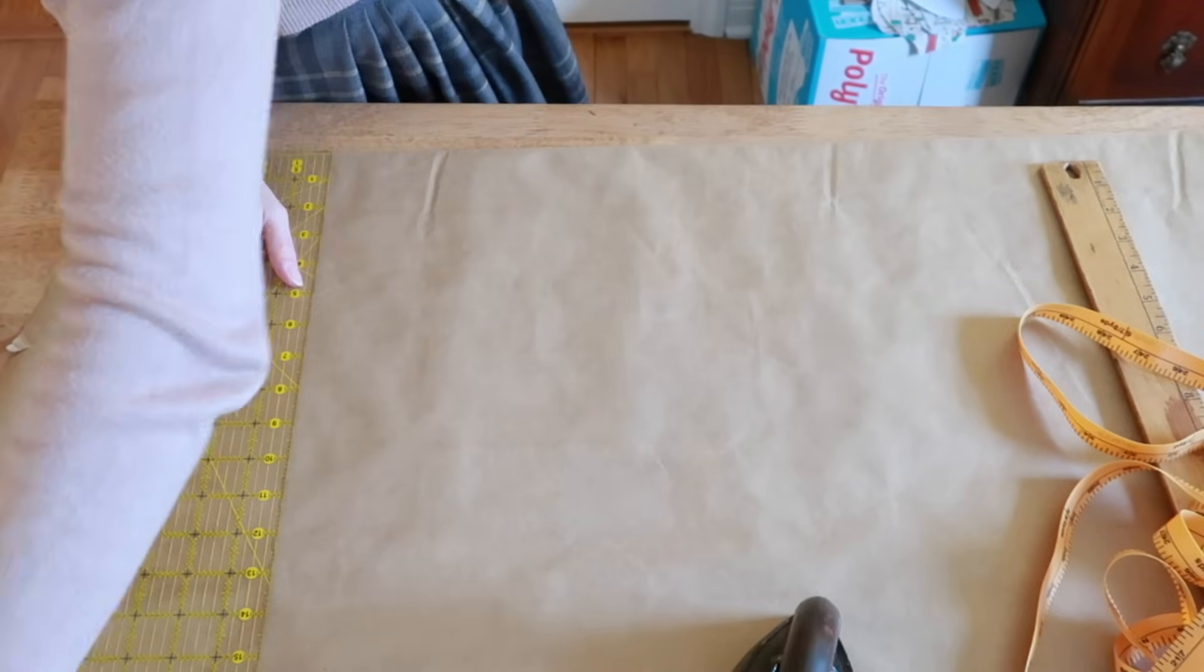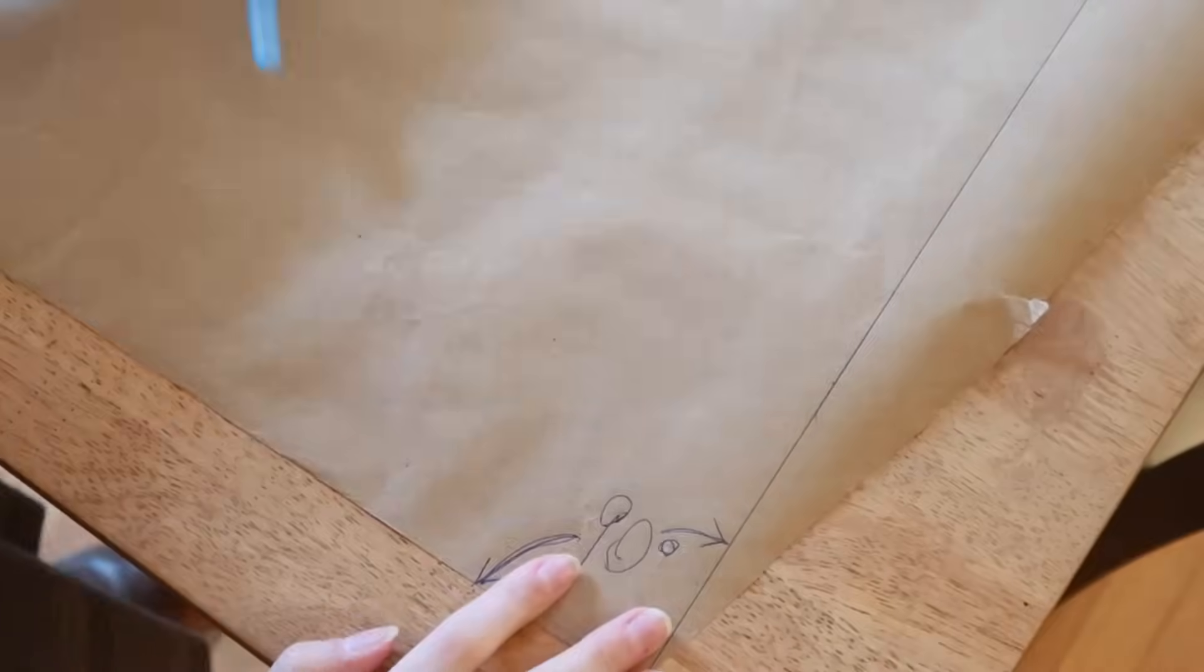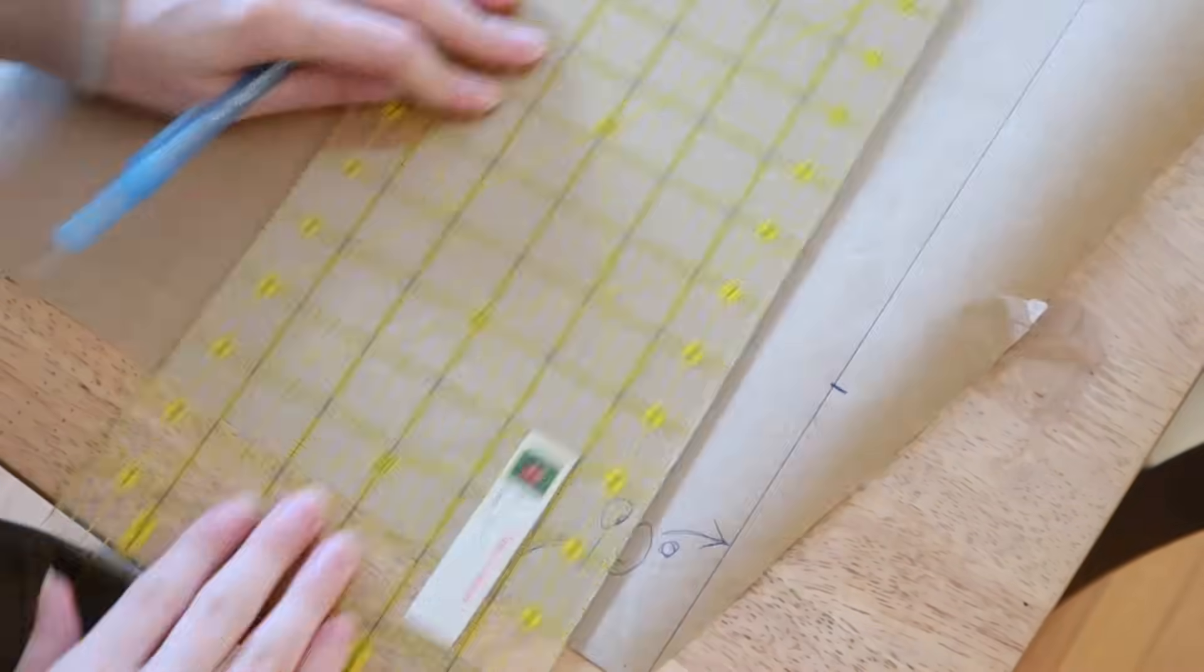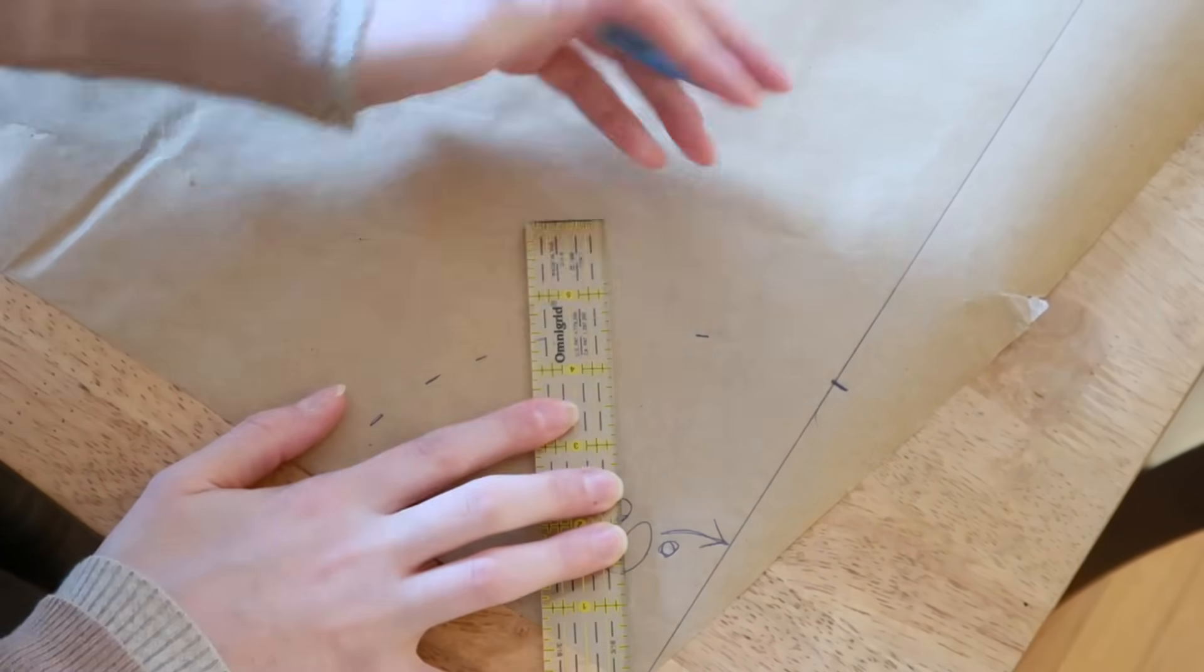So now we're ready to draft it out on paper. For a quarter of a circle, I need a 90 degree right angle. Starting from the angle, measure out 4.5 inches. Then you can measure that out at different points and connect the dots.